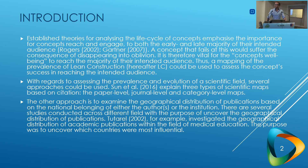With regards to assessing the prevalence and evolution of a scientific field, several approaches could be used. Sun et al. explain three types of scientific maps based on citations: the first is paper-level citations, the second is journal-level citations mapping, and the last is category-level map citations. We will not go further into those details because we have chosen another approach — examining the geographical distribution of publications based on the national belongings of either authors or their institutions.